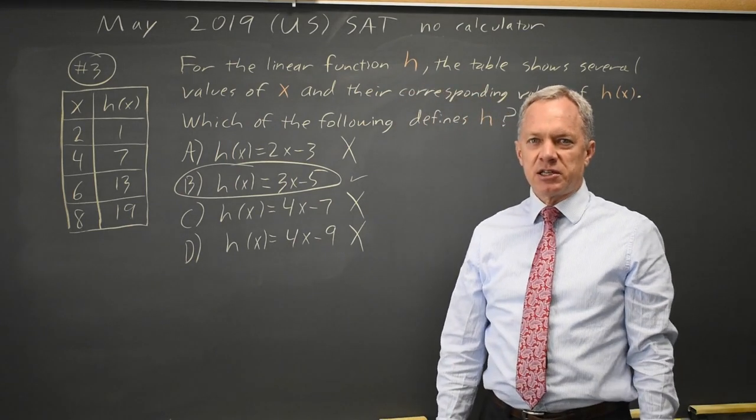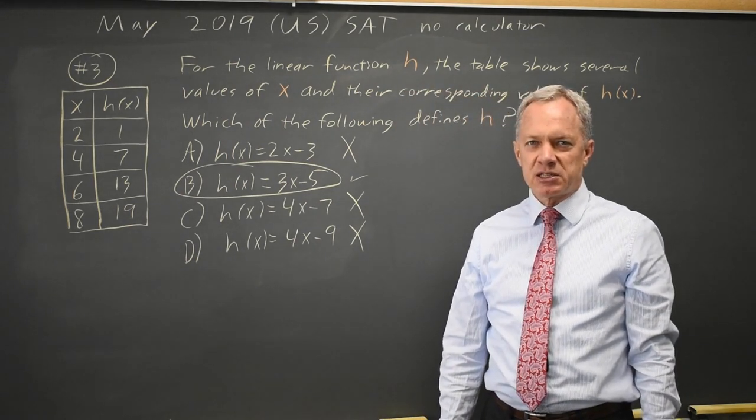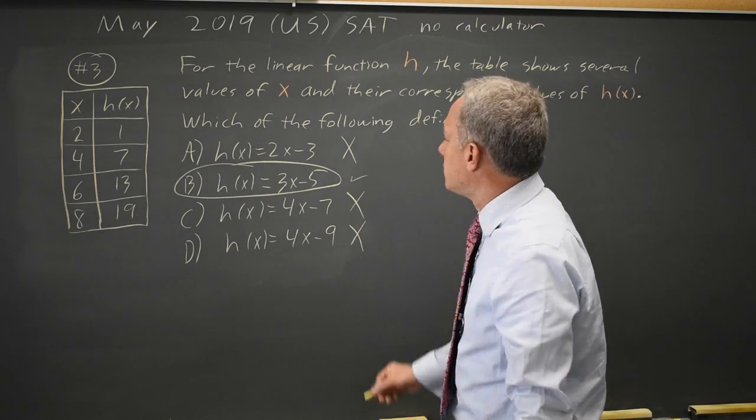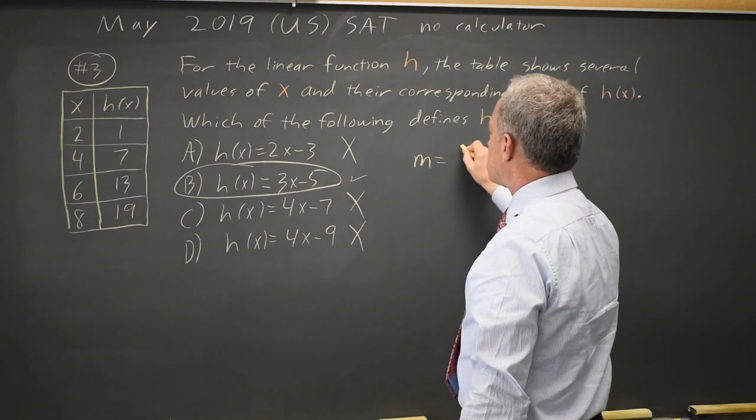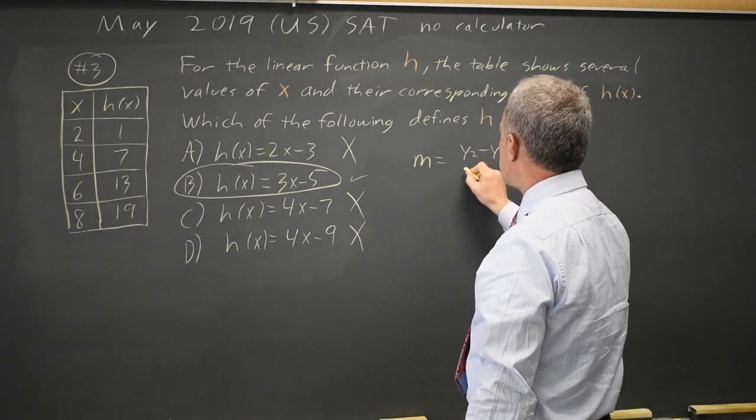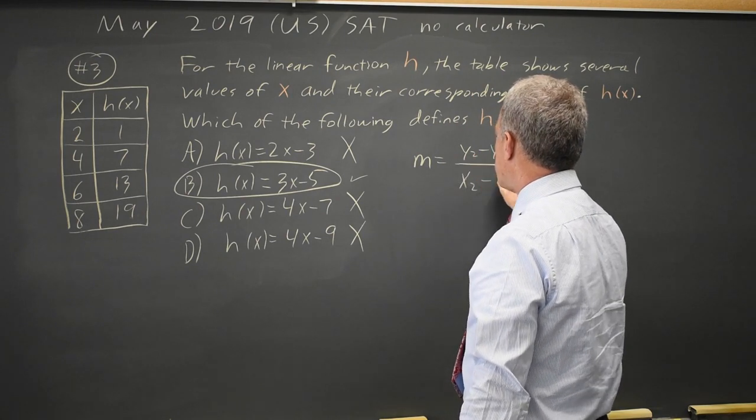Alternatively, if you don't like guess and check, which I am a big fan of guess and check because it's fast, we can also find the slope. The slope is y2 minus y1 over x2 minus x1.